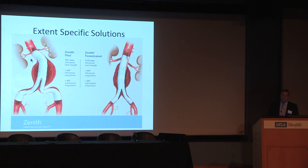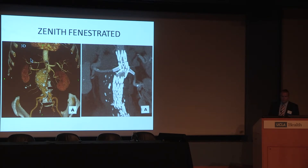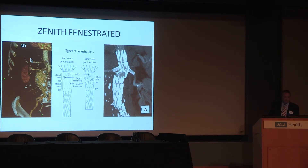The Zenith Flex is indicated for a 15 mm neck with 60-degree angulation or less. The Z-Fen allows treatment of very short necks with renal stents and scallops for visceral vessels. Combining the Zenith Flex and Z-Fen, they say they're able to treat 95% of anatomy. The aortic extender can be configured with a multitude of small and large fenestrations or scallops for the visceral vessels.